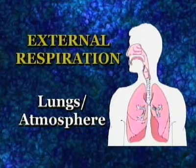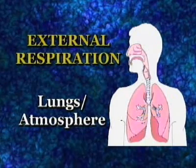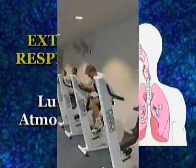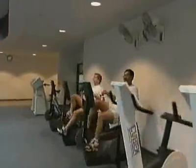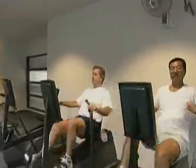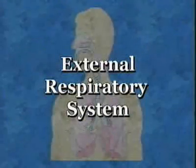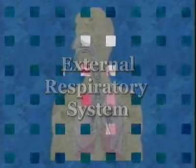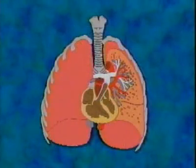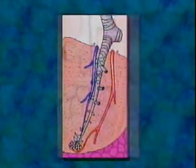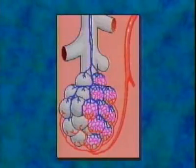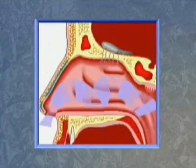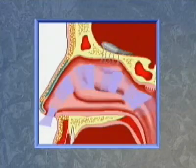External respiration is the exchange of gases between the lungs and the surrounding atmosphere. The external system is comprised of several complex parts: the oral and nasal passages, trachea, bronchi, bronchioles, alveolar duct, and alveoli — the air sacs. As air enters the oral and nasal cavities, it is warmed, moisturized, and filtered.